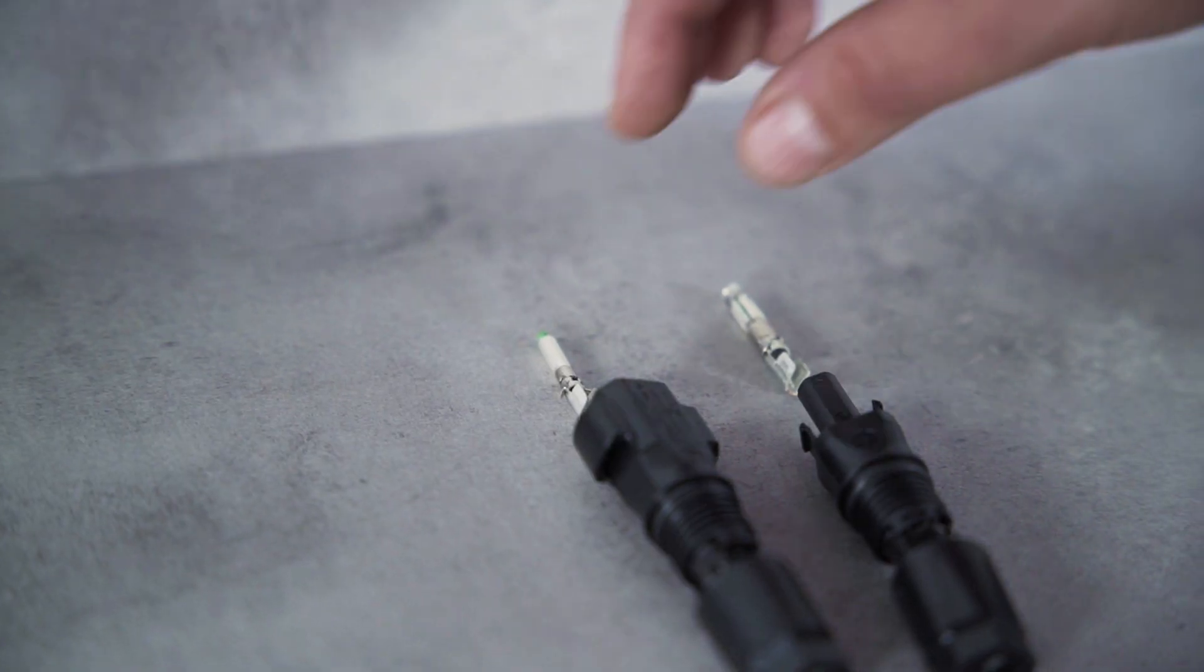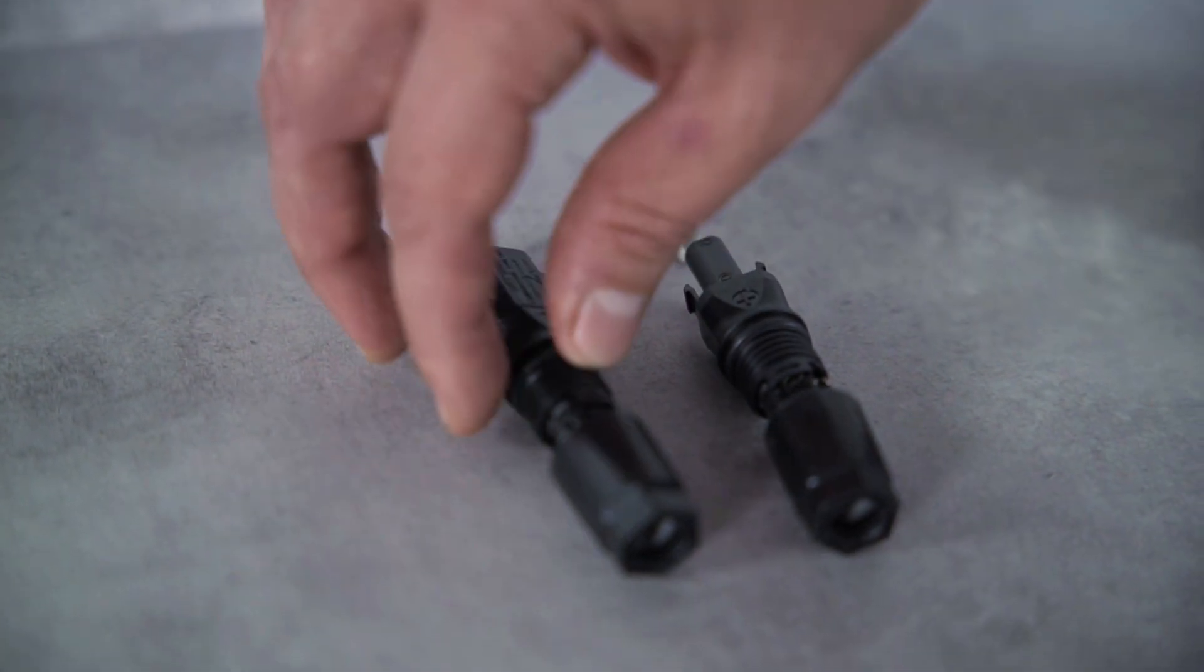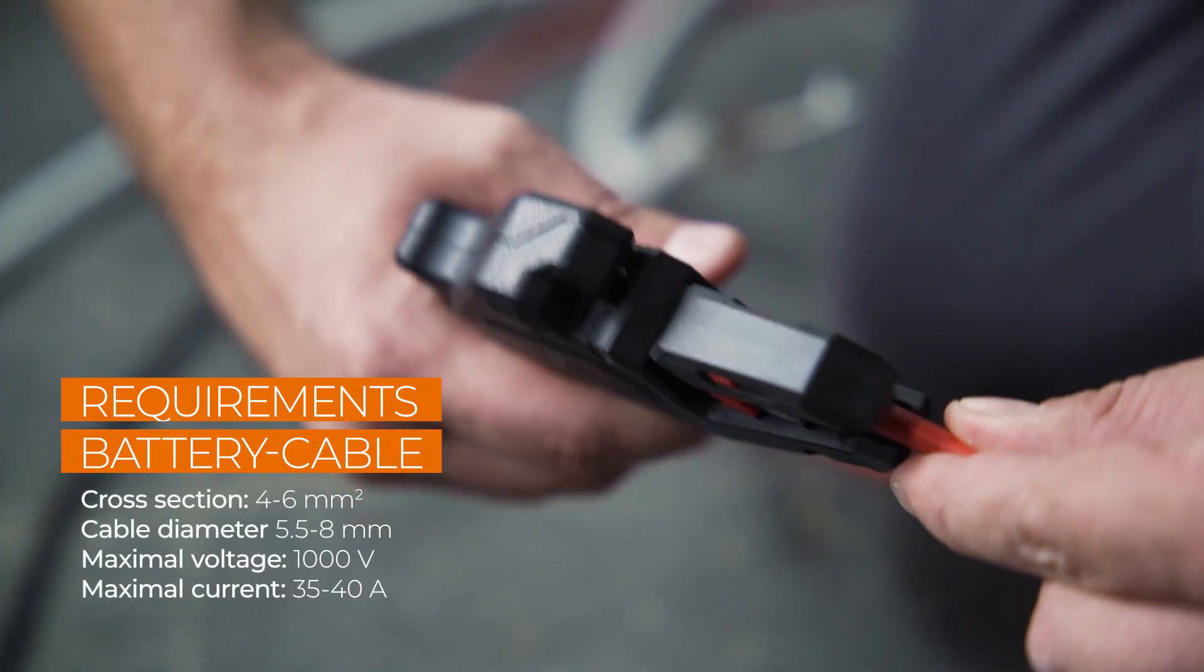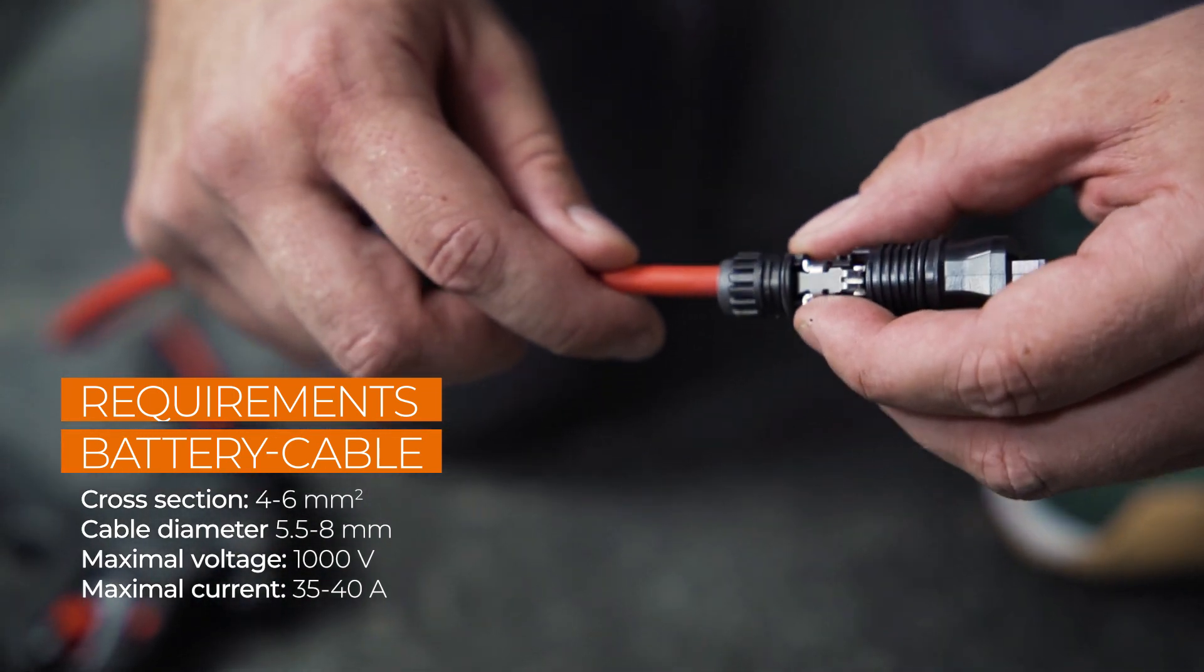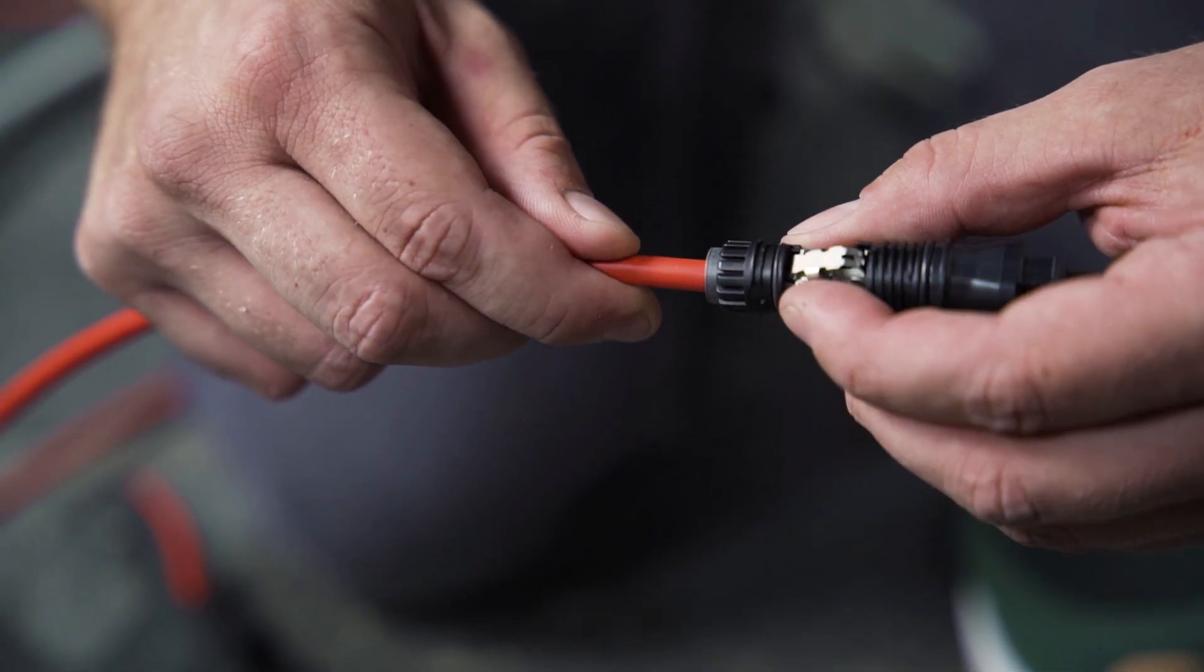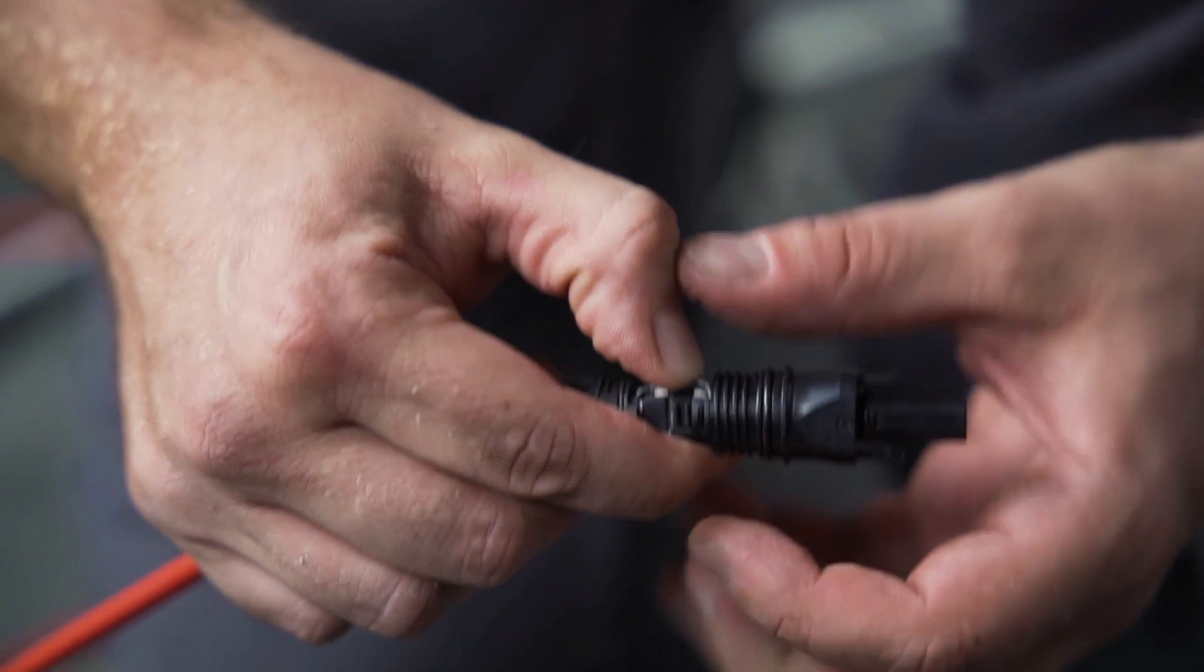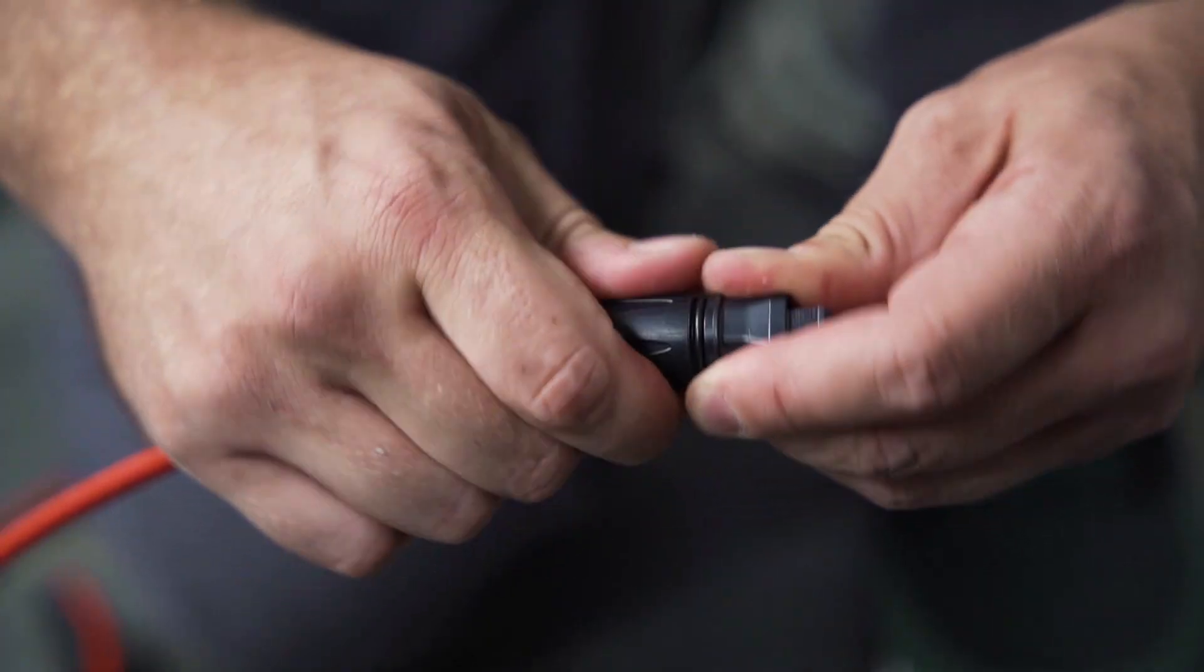Sun clicks connectors are used to connect the battery. Pay attention to the correct polarity. This is marked on the inverter. First insert the cable until resistance is felt. Now the cable is fixed to the connector by pushing down the spring. A clear click can be heard when it clicks into place. Tighten the plug, plug it in, that's it.